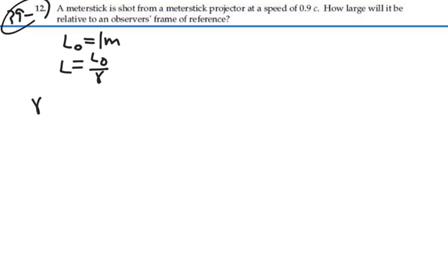In this case, we need to know what gamma is. Gamma is going to be equal to one over the square root of one minus beta, which in this case is 0.9 squared. So that is equal to 2.294, which is our gamma.